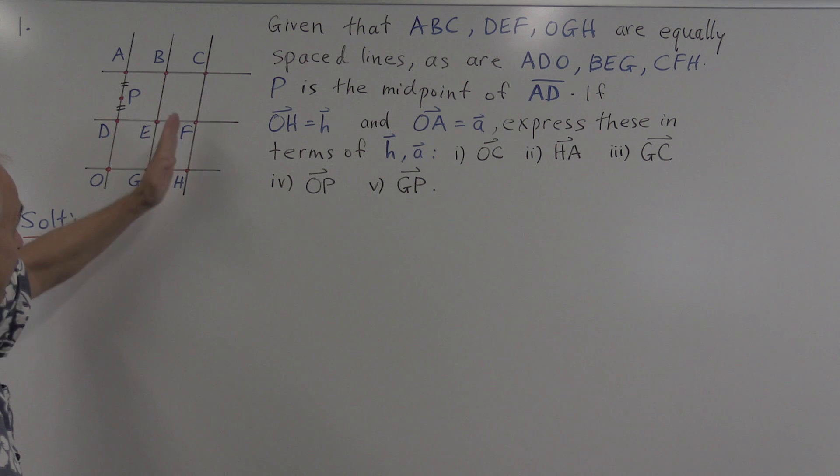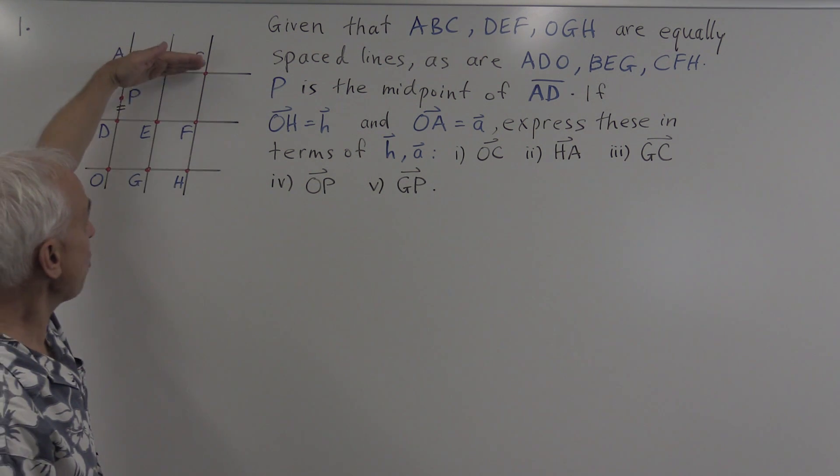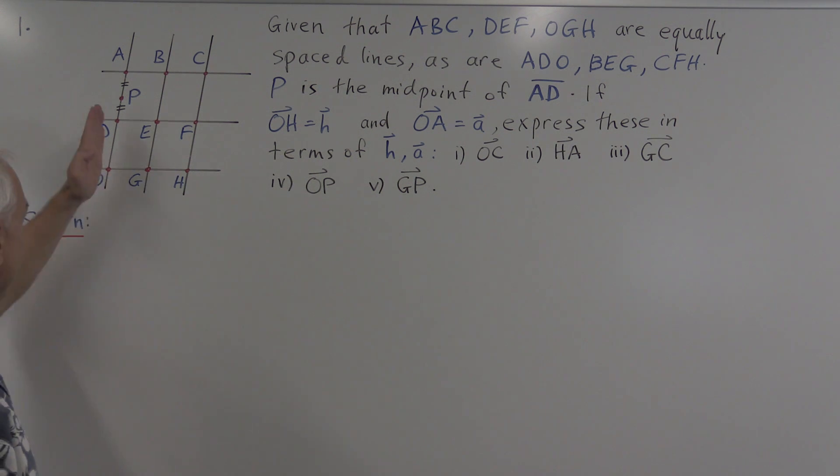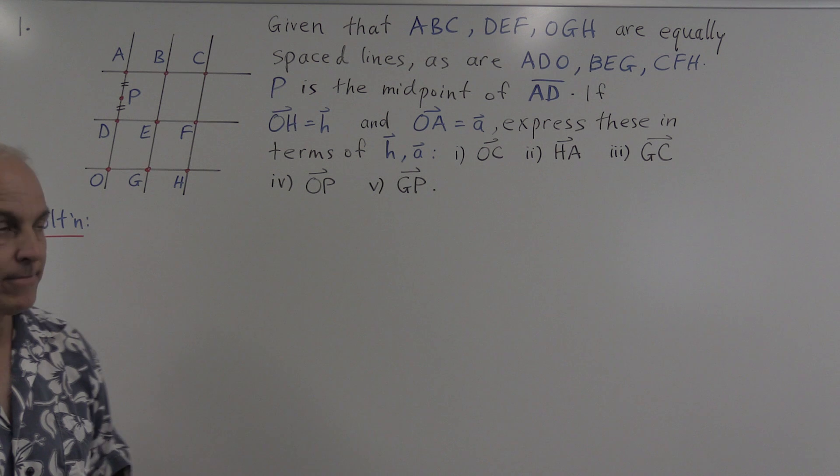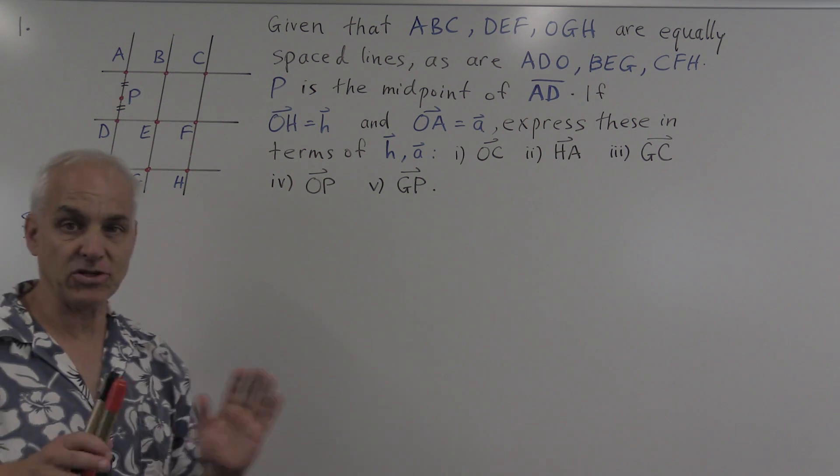Here's the problem. We have three lines horizontal: ABC is one line, DEF is another line, OGH is another line, and these are equally spaced lines. We also have equally spaced lines in the other directions: the line ADO, BEG, and CFH. And then there's an additional point P, which happens to be the midpoint of the segment AD.